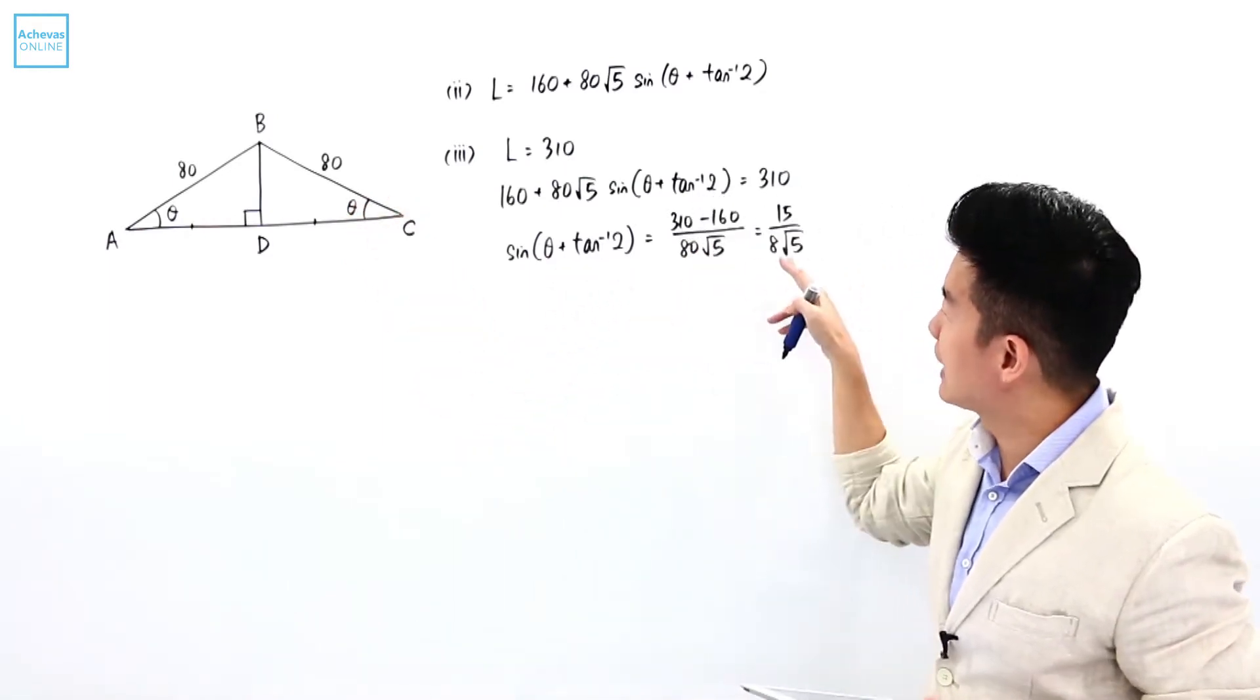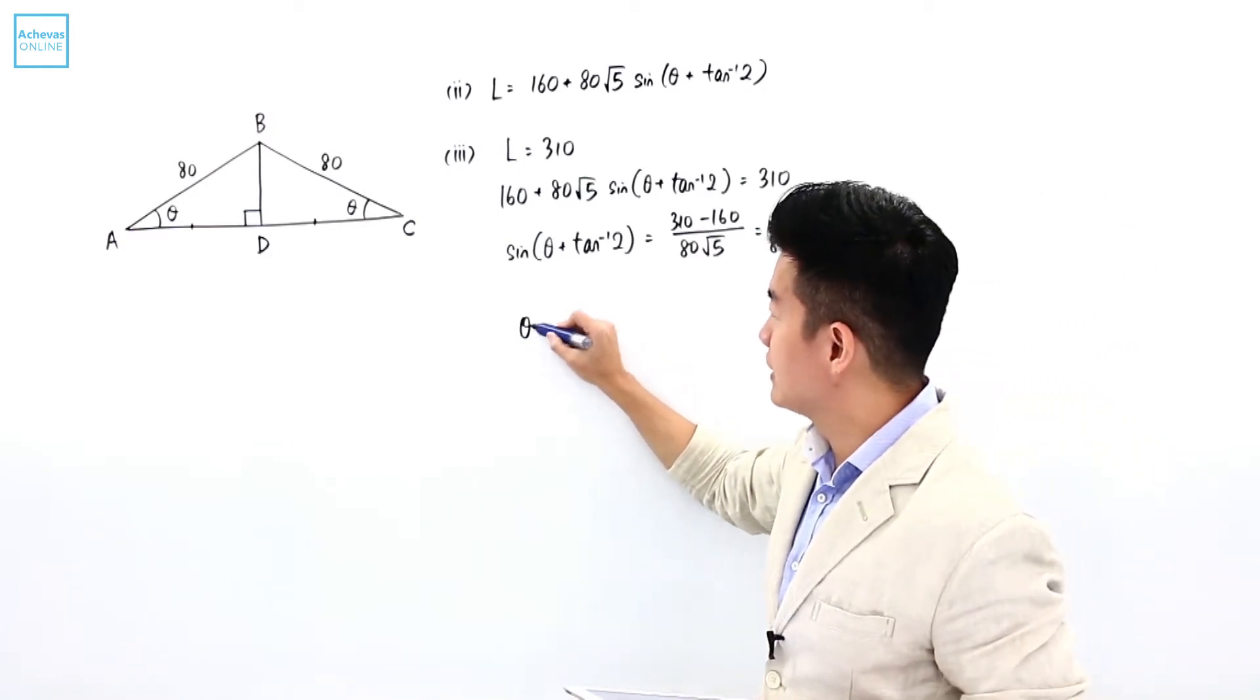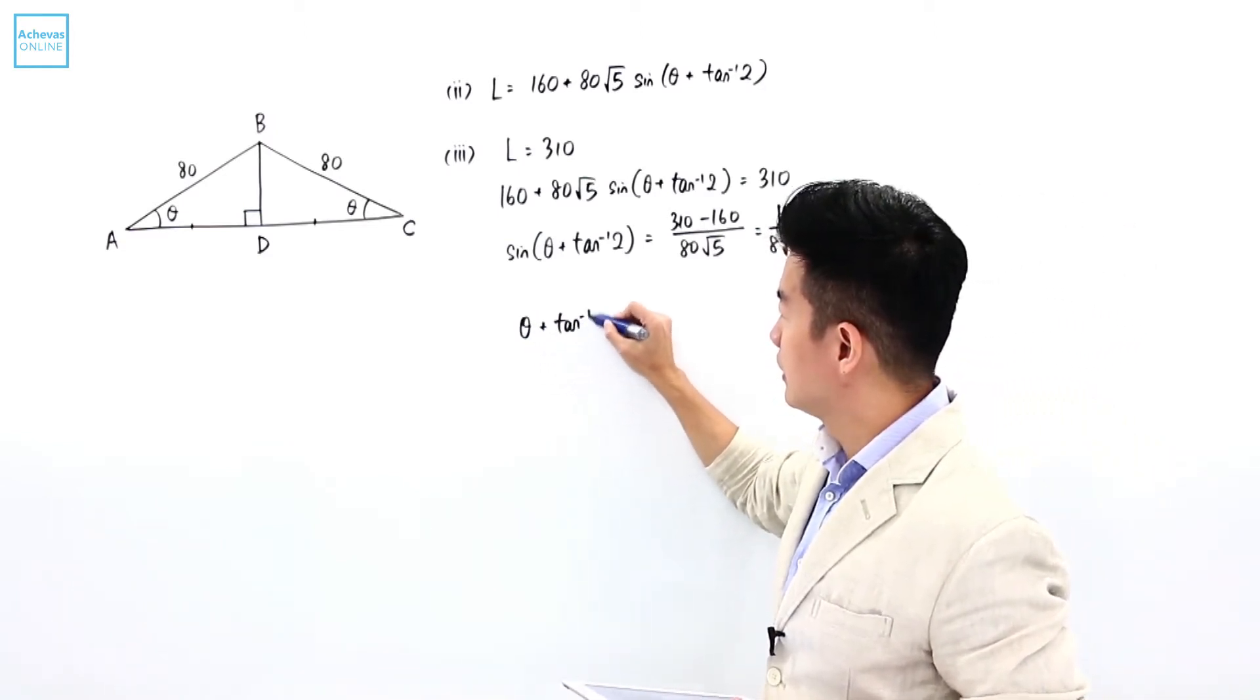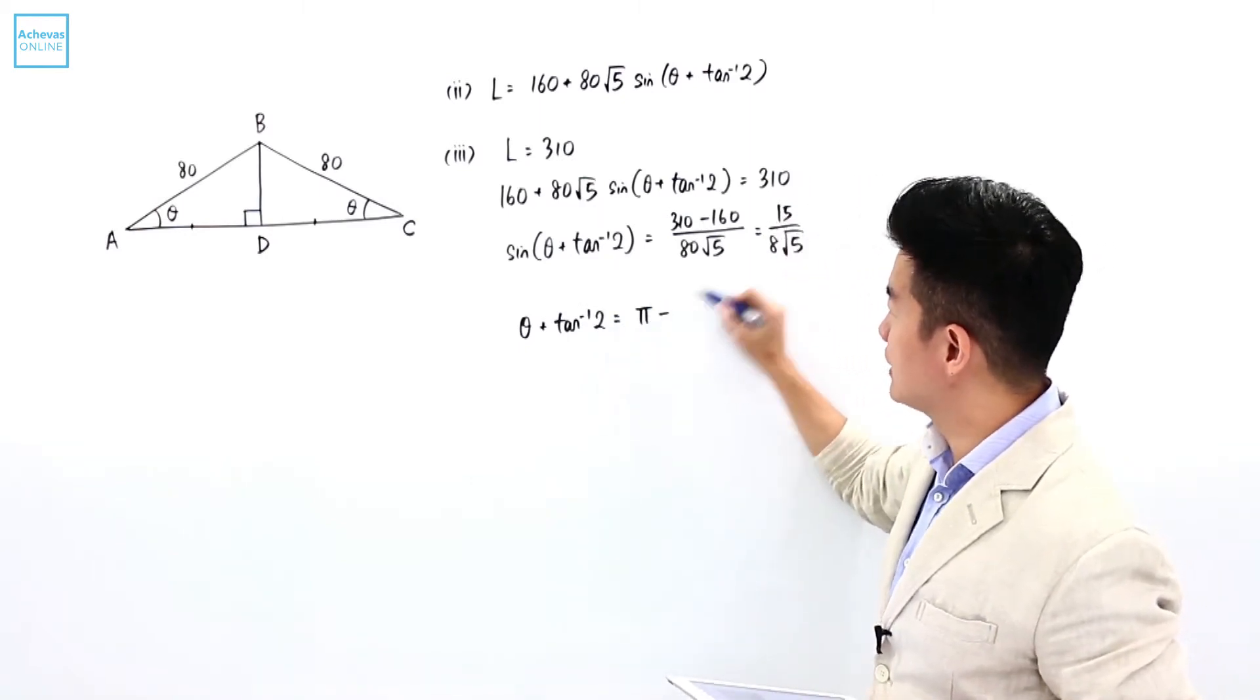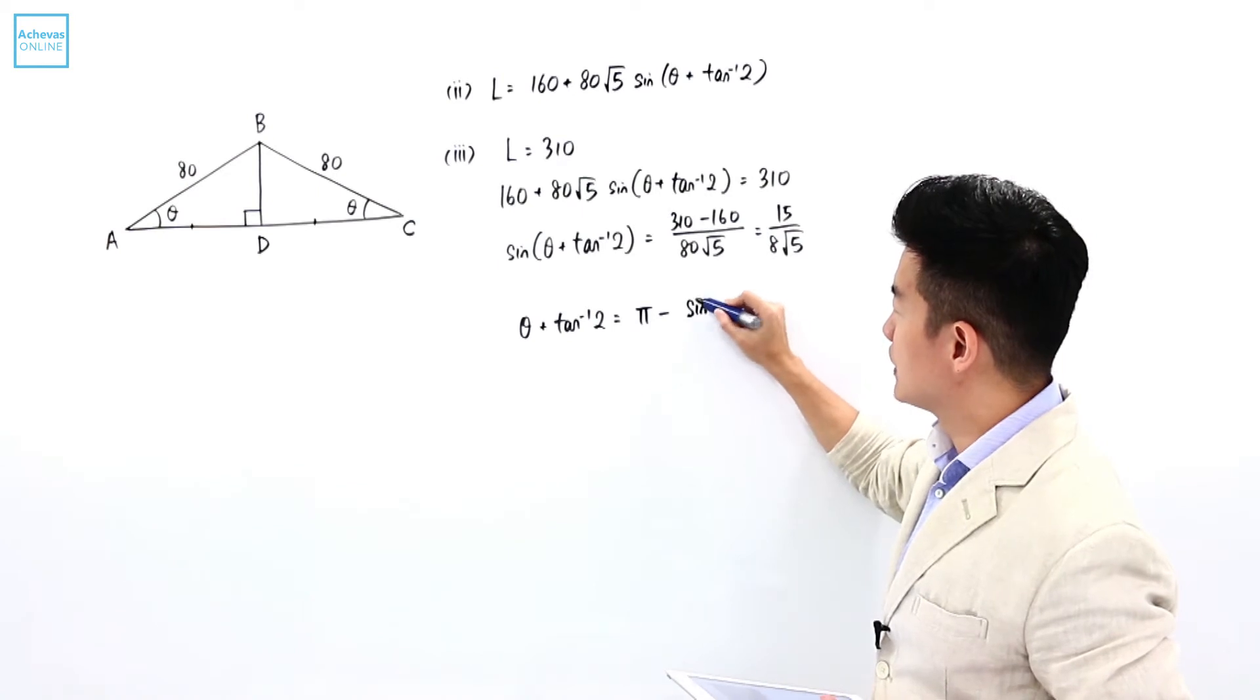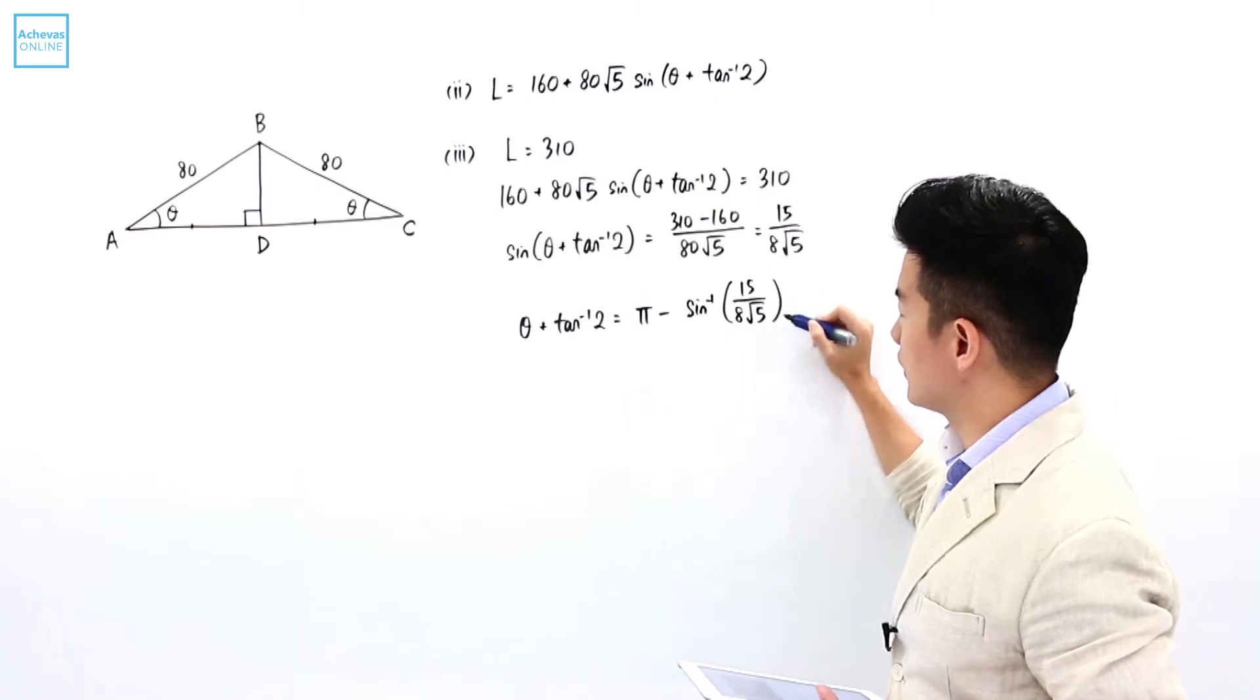I'm going to let this angle be an obtuse angle, which means that theta plus tangent inverse of 2 is going to be in the second quadrant, which is pi minus the basic angle, which is sine inverse of 15 over 8 square root of 5.